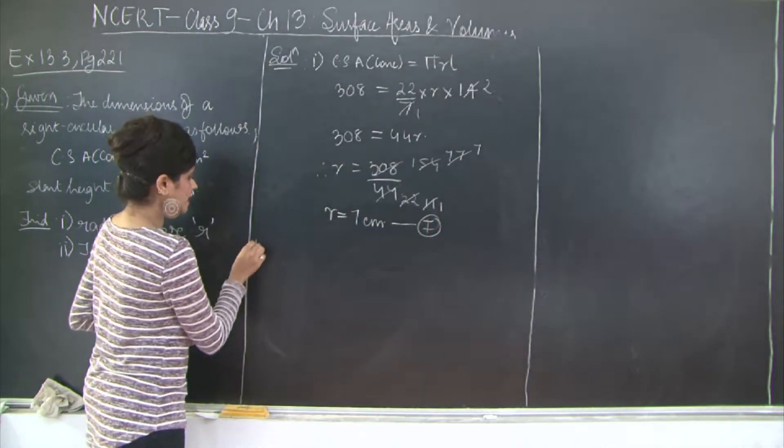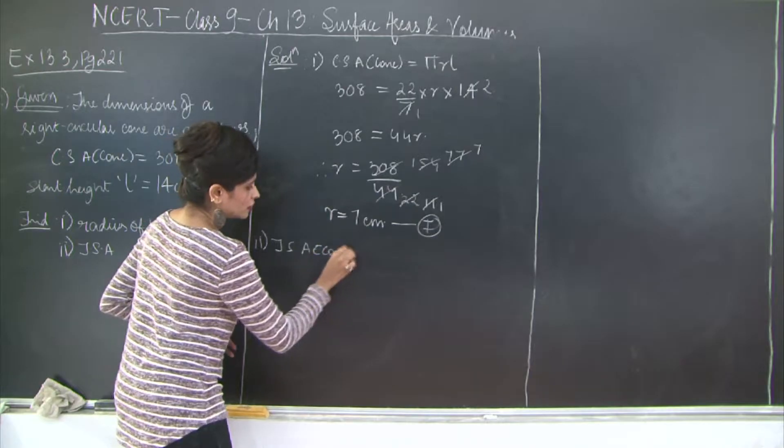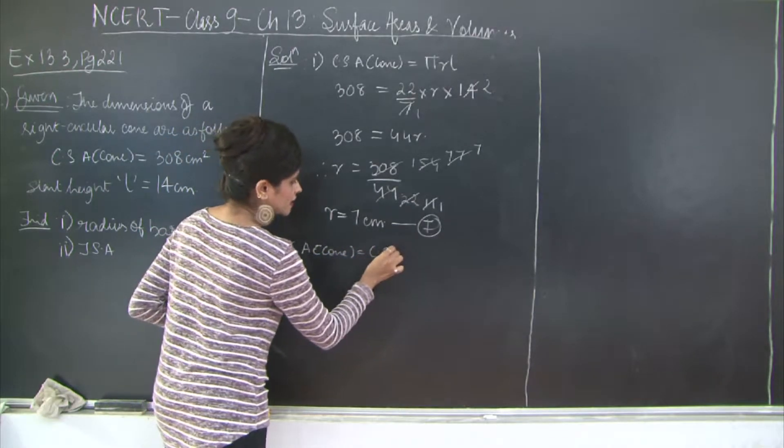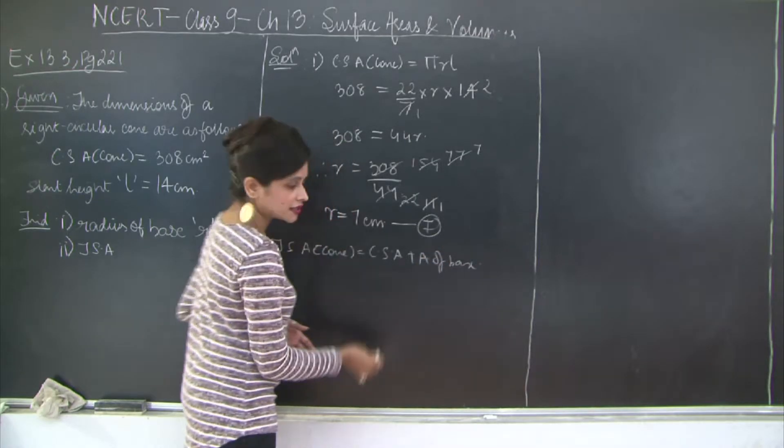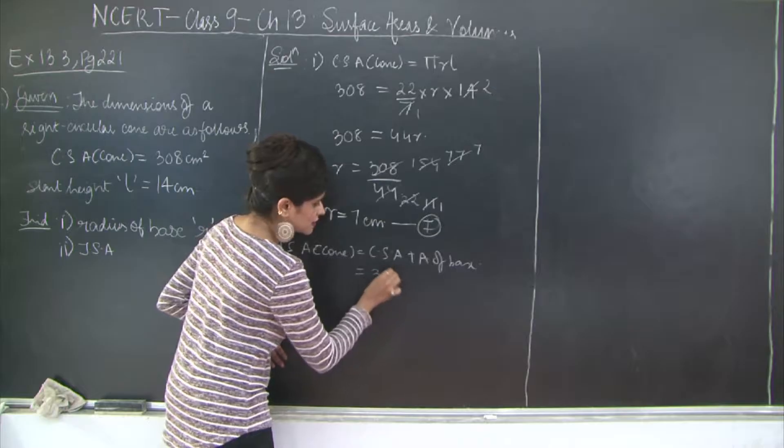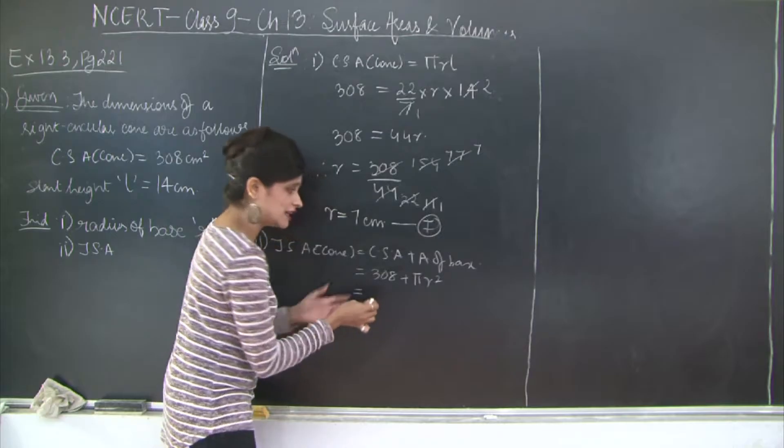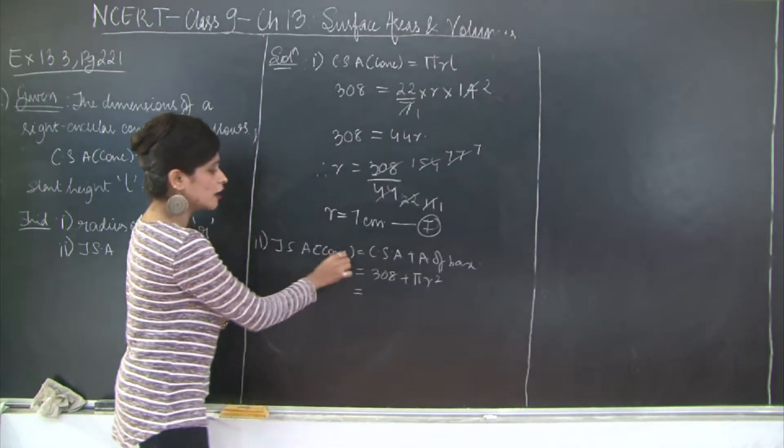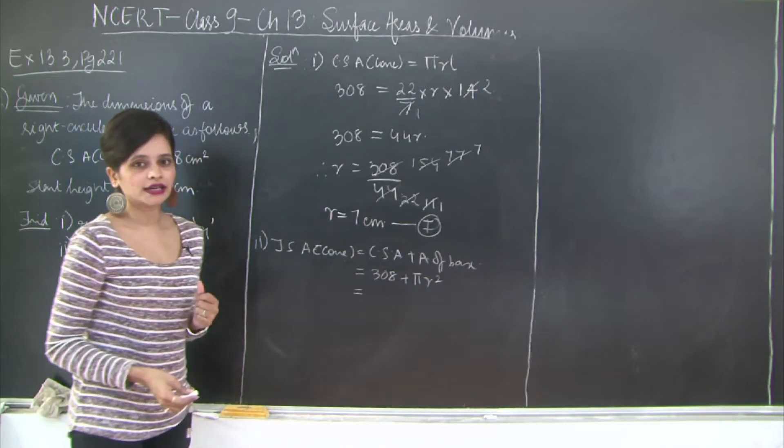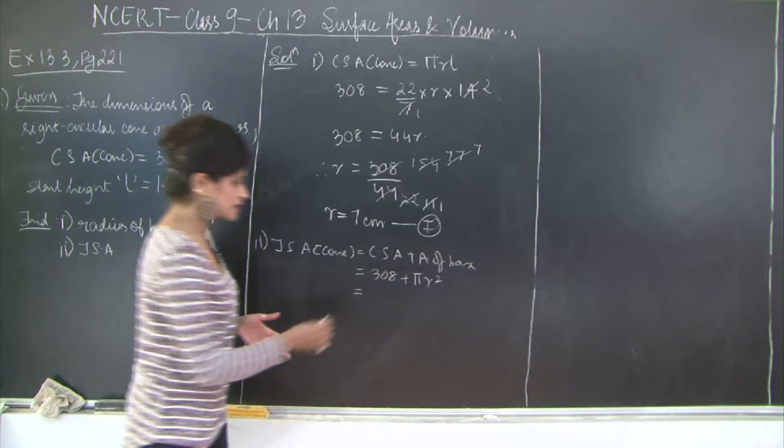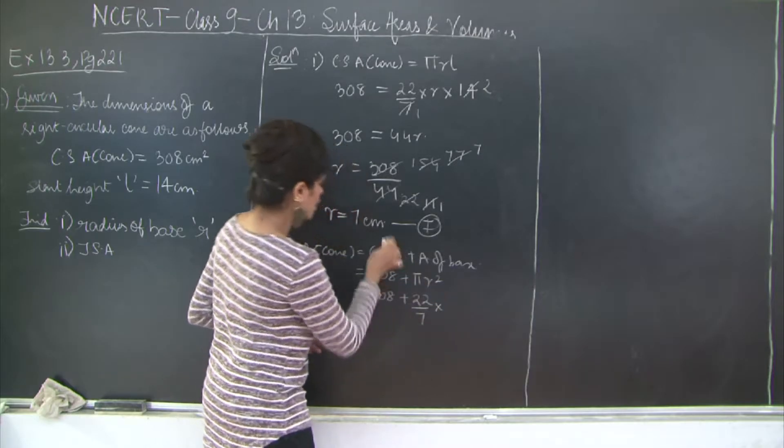Now the total surface area of cone is equal to curved surface area plus area of base. So this is going to be 308 plus π r². So this is going to be, you can even use the formula π r into L plus r, but this is the most convenient way to find out the total surface area. So you need to be a little quick and this will come only through practice.